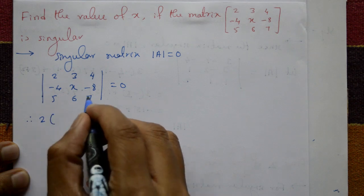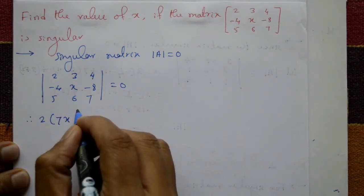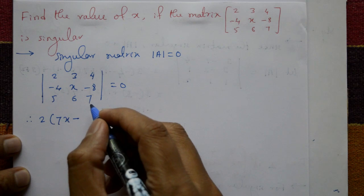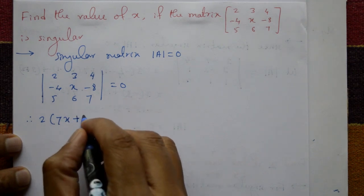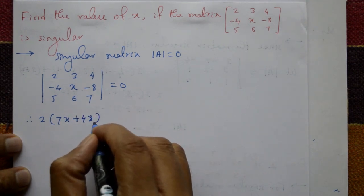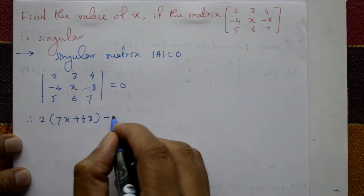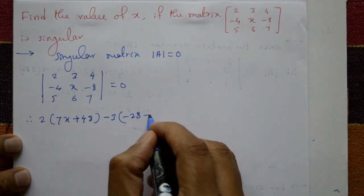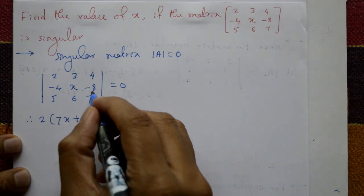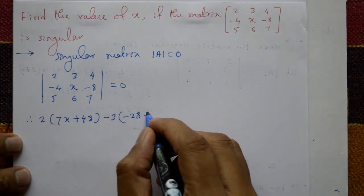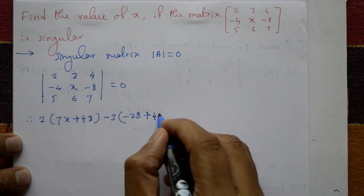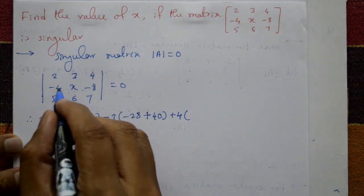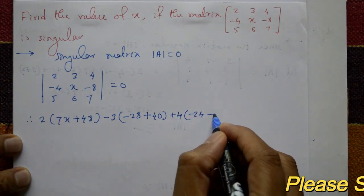Two multiplied by (7x minus 6 into -8), which is -48, so that becomes plus 48. Minus 3 into (-4 into 7), which is -28, so minus sign gives plus. Then 5 into -14 gives minus, minus into minus gives plus 40. Plus 4 multiplied by -24, minus sign.